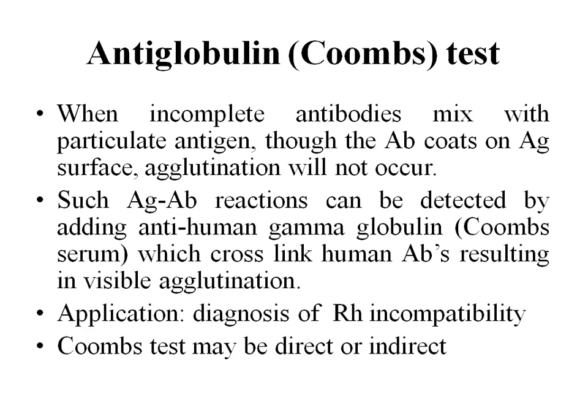The anti-RH antibodies are actually incomplete antibodies. So when they are mixed with the RH positive RBCs, they will not show any agglutination. Hence, to make the reaction visible, we are going to add an anti-human globulin, which is called the Coombs serum, so that the reaction becomes visible.